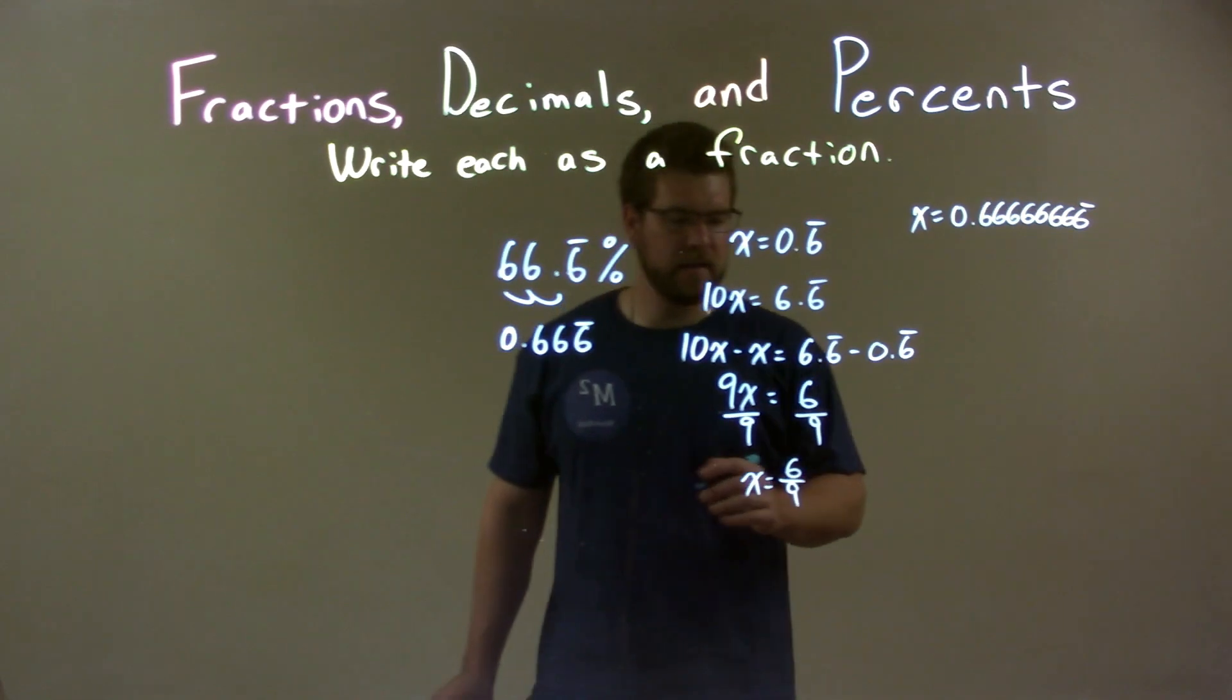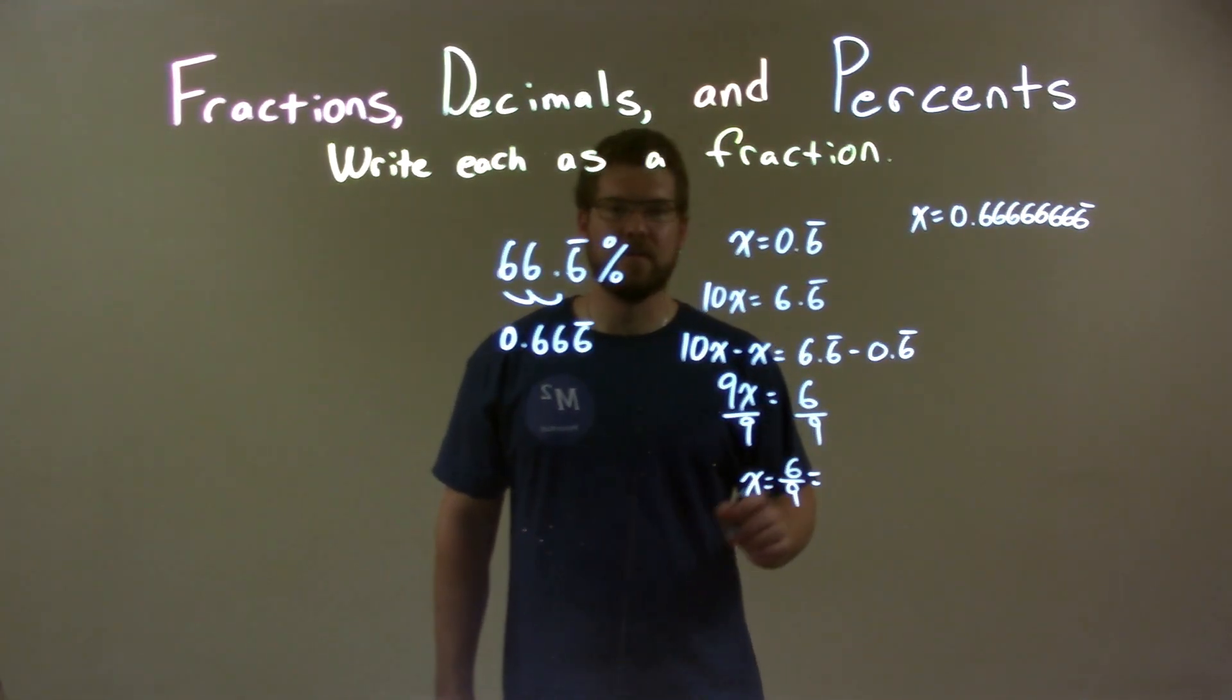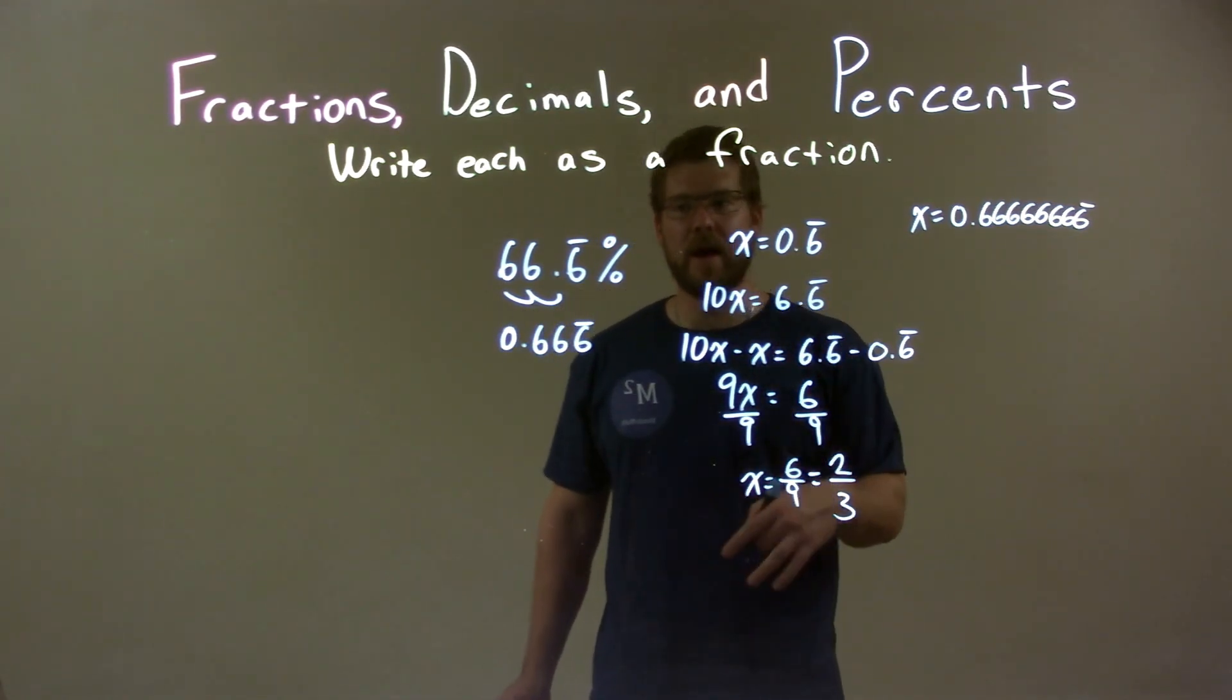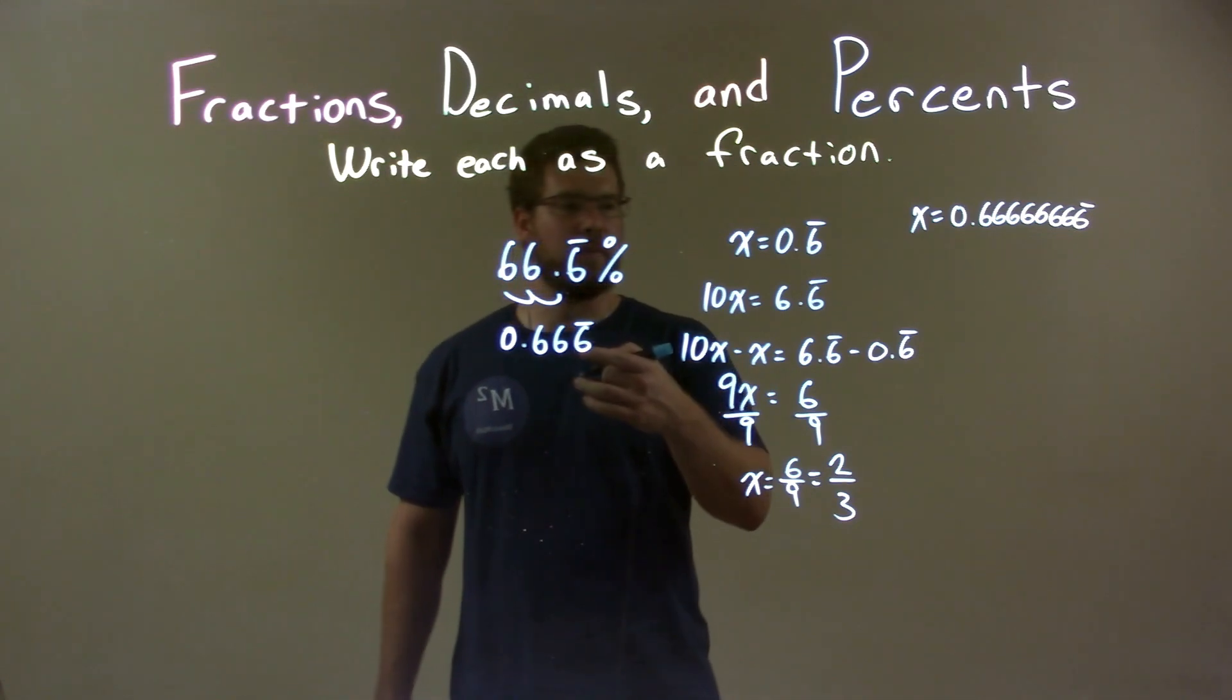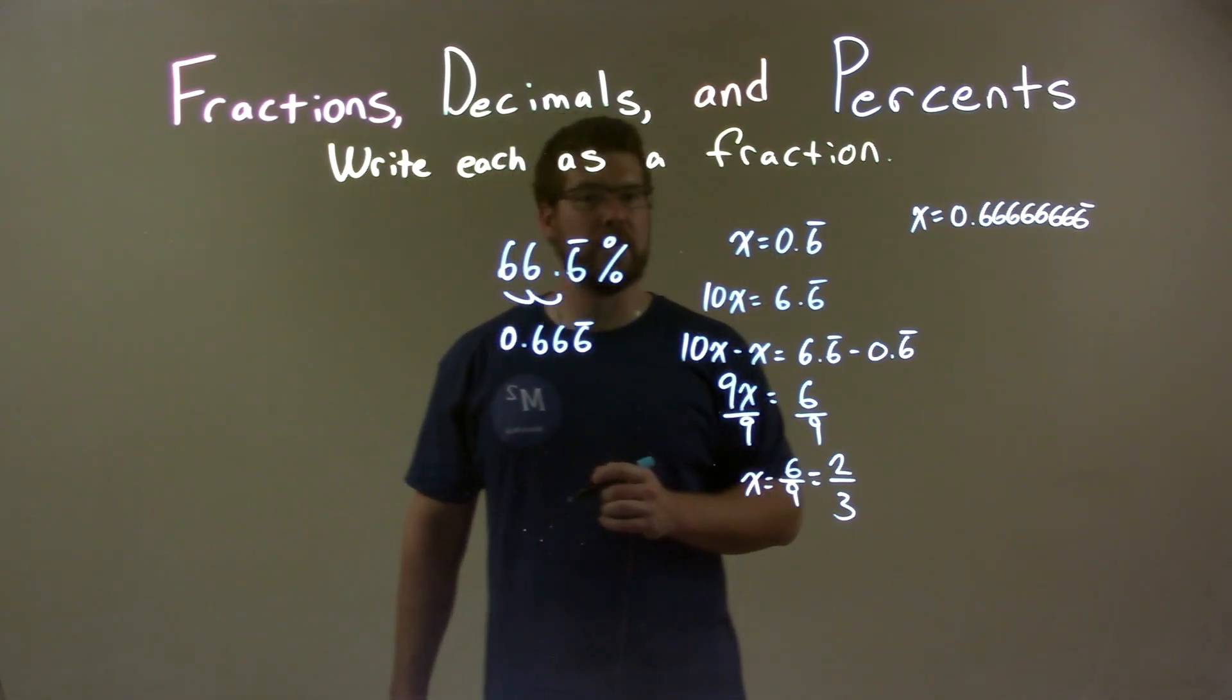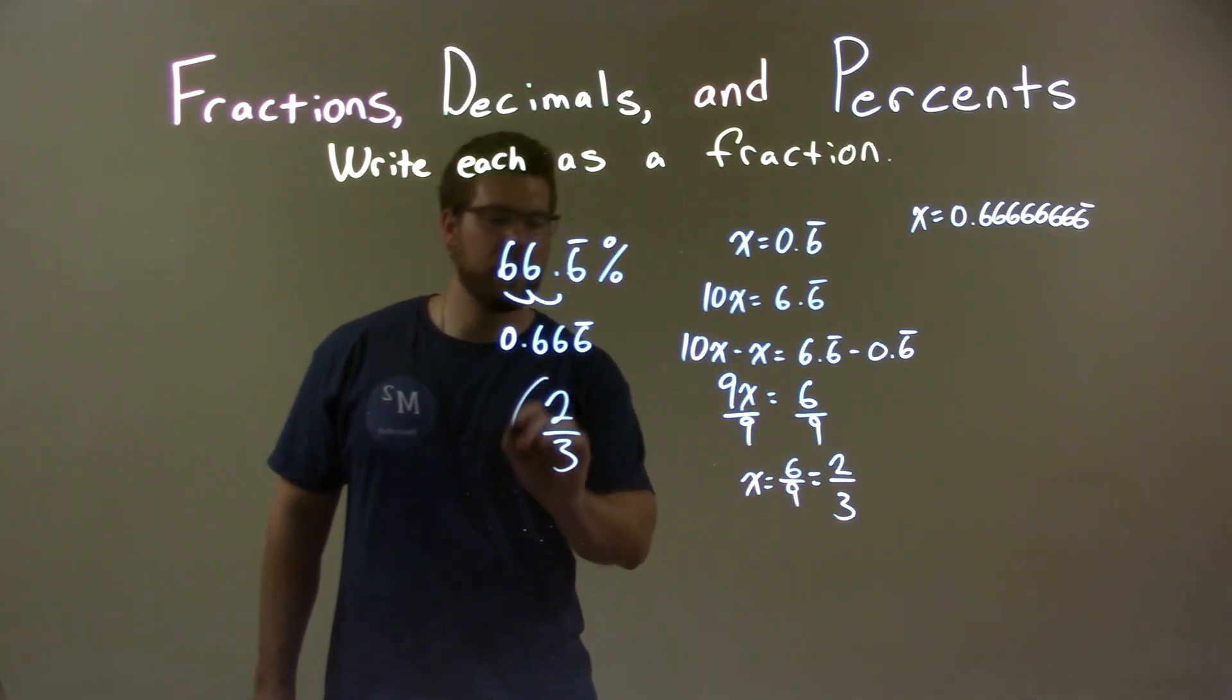Well, 6 over 9, both are divisible by 3. 3 goes into 6 two times, and 3 goes into 9 three times, and so our answer is 2 thirds. That's equal to x, which is 0.6 repeating, and 0.6 repeating is the same as 66.6%. So our final answer is 2 thirds.